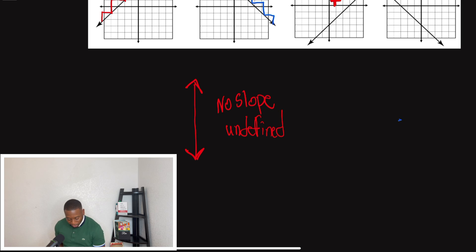And in that same breath, do not confuse the vertical line with the horizontal line because the horizontal line does have a slope. It does have a slope and its slope will always be M is equal to zero. It has a slope of zero.